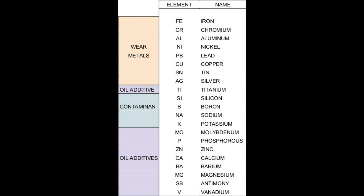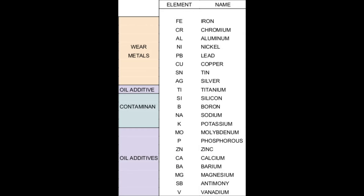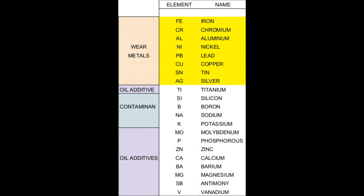Let's examine the sources of the elements commonly measured in your oil analysis report. The elements are measured by a spectrometer and detect particles up to about 8 microns in size. These are invisible to the naked eye, and if you can see metallic particulate in your sample, the spectrometer cannot detect it. The elements can generally be divided into three categories: wear metals, contaminants, and oil additives.